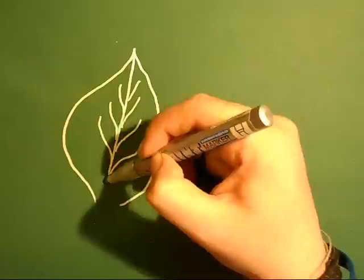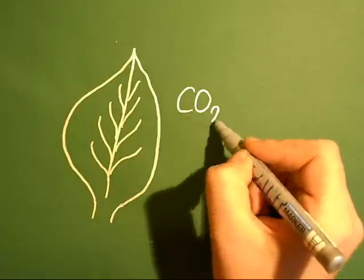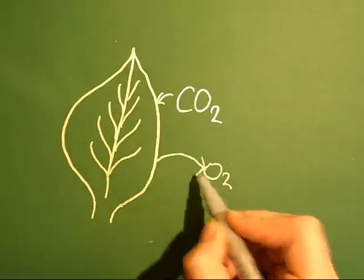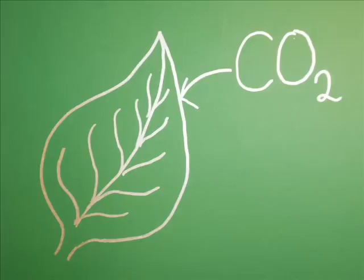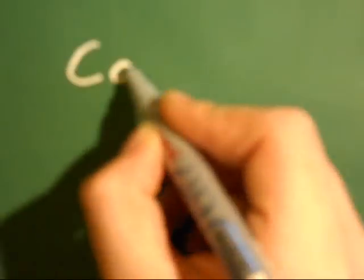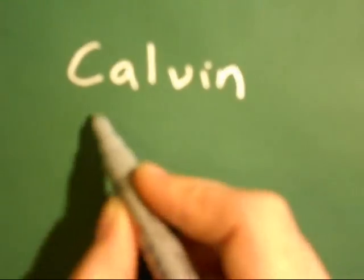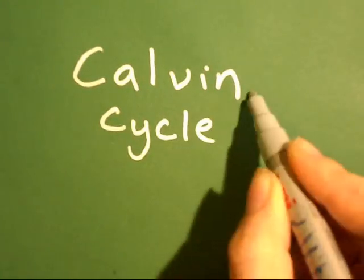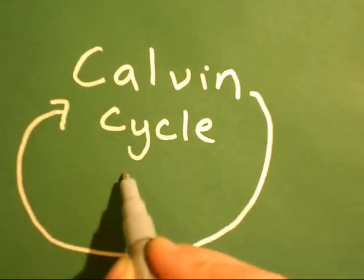Two goes in and two goes out. In, out, in, out — it shakes it all about. It starts the Calvin cycle and it goes around, and that's what it's all about.